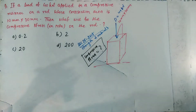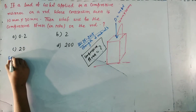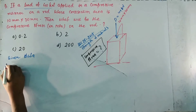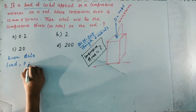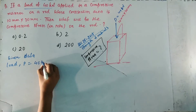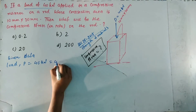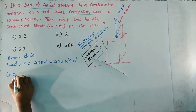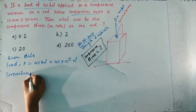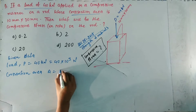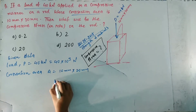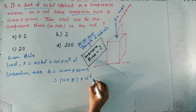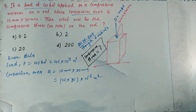We need to find the value of compressive stress produced on the rod. First, we note the given data. Load P equals 40 kN, which in SI units is 40 × 10³ N. The cross-section area of the rod is A = 10 mm × 20 mm, which equals 10 × 20 × 10⁻⁶ m² in SI units.